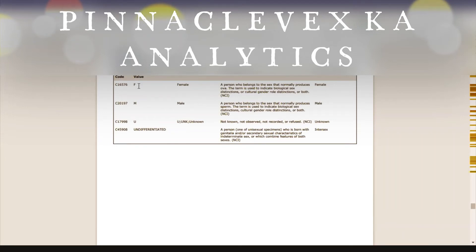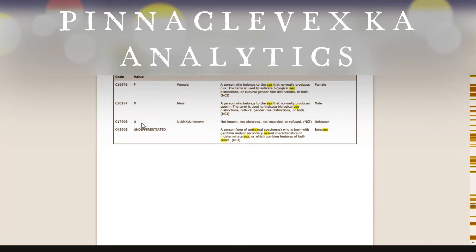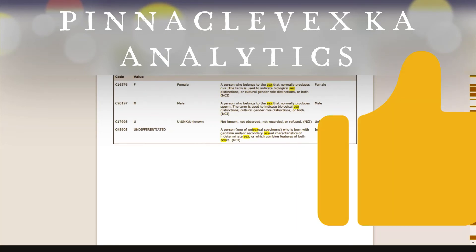So here we should submit either F, M, U, or Undifferentiated — whatever is under the CDISC submission value. Other than these four, you should not submit anything. Like if you submit the complete name 'female,' you should not do that. Either F, M, or U. That is what controlled terminology says.